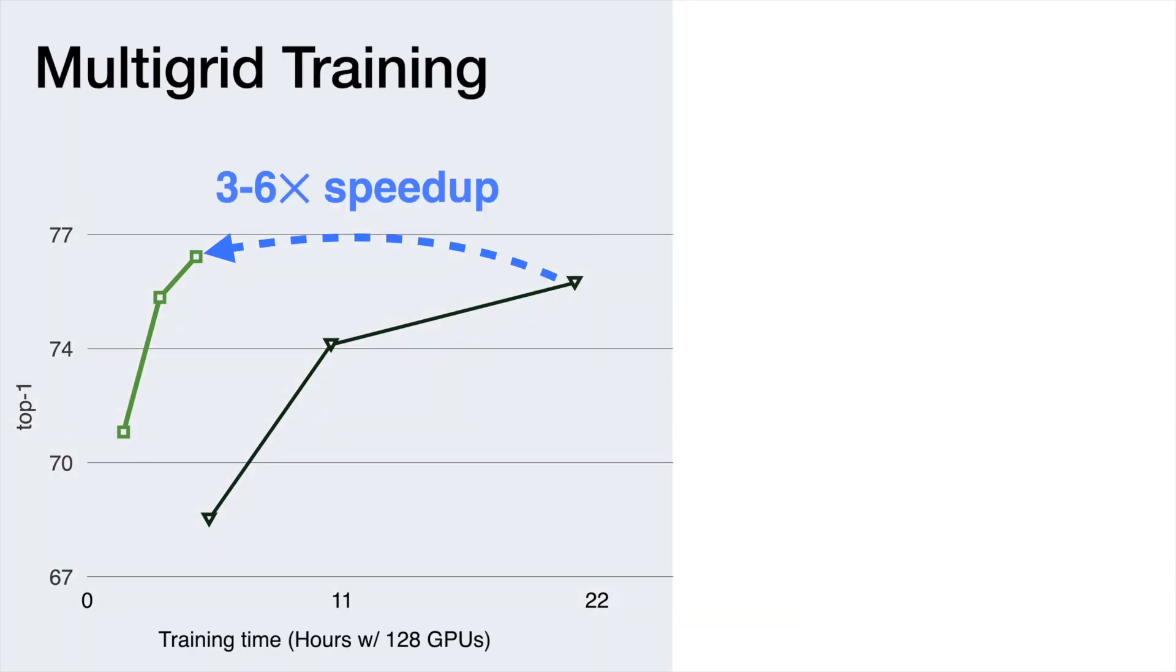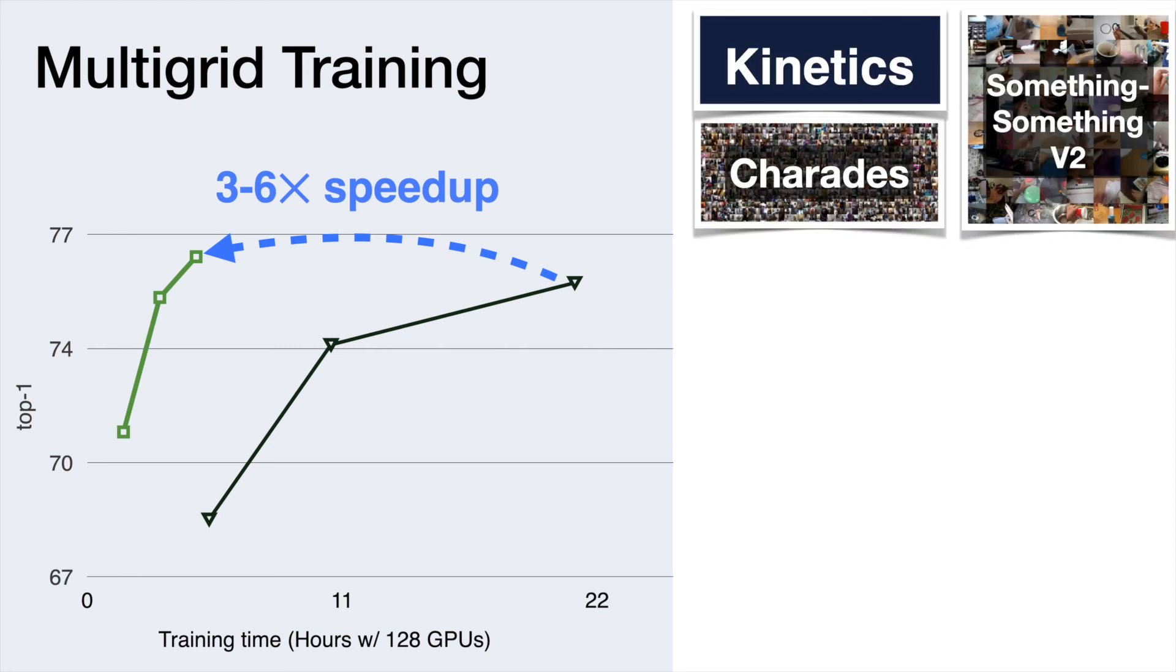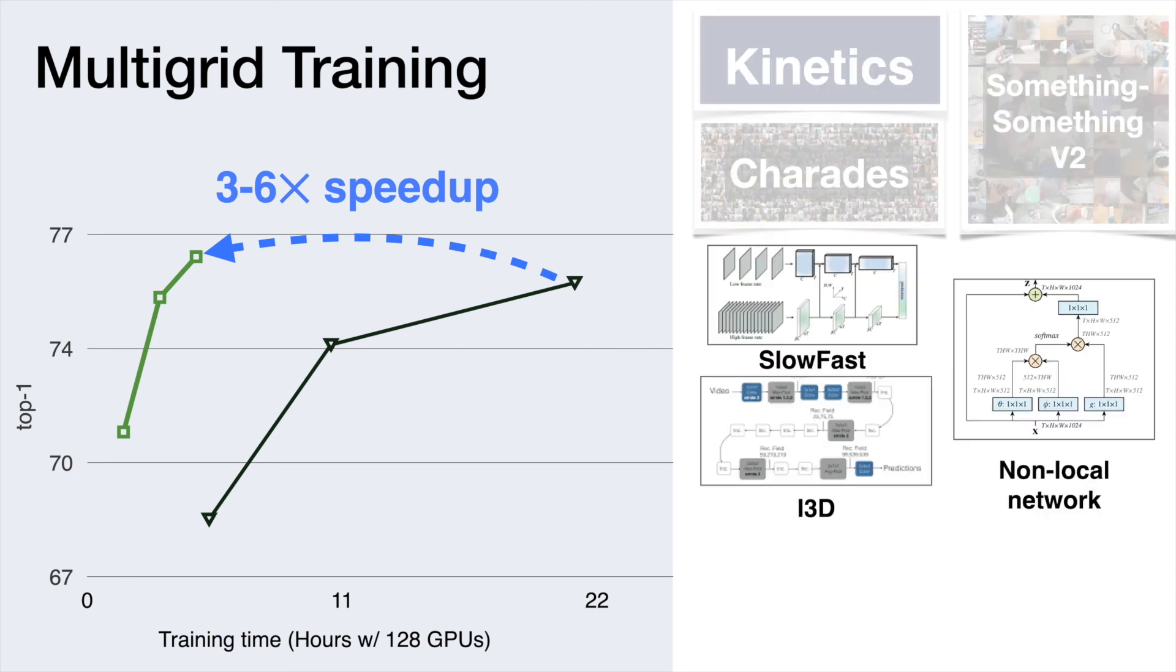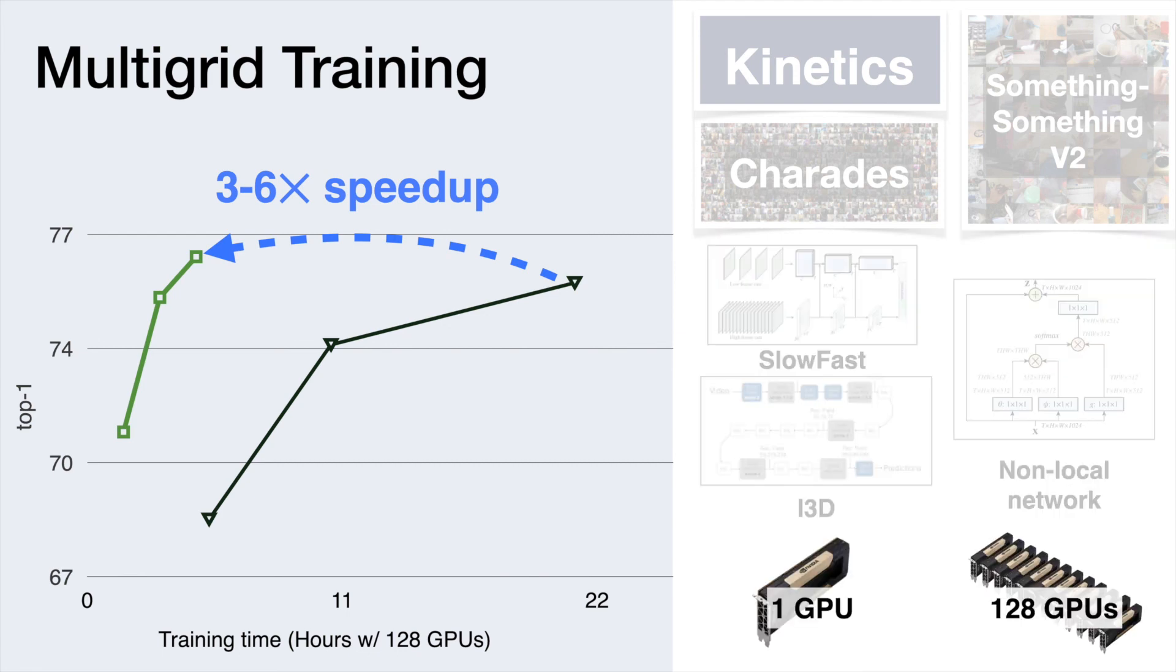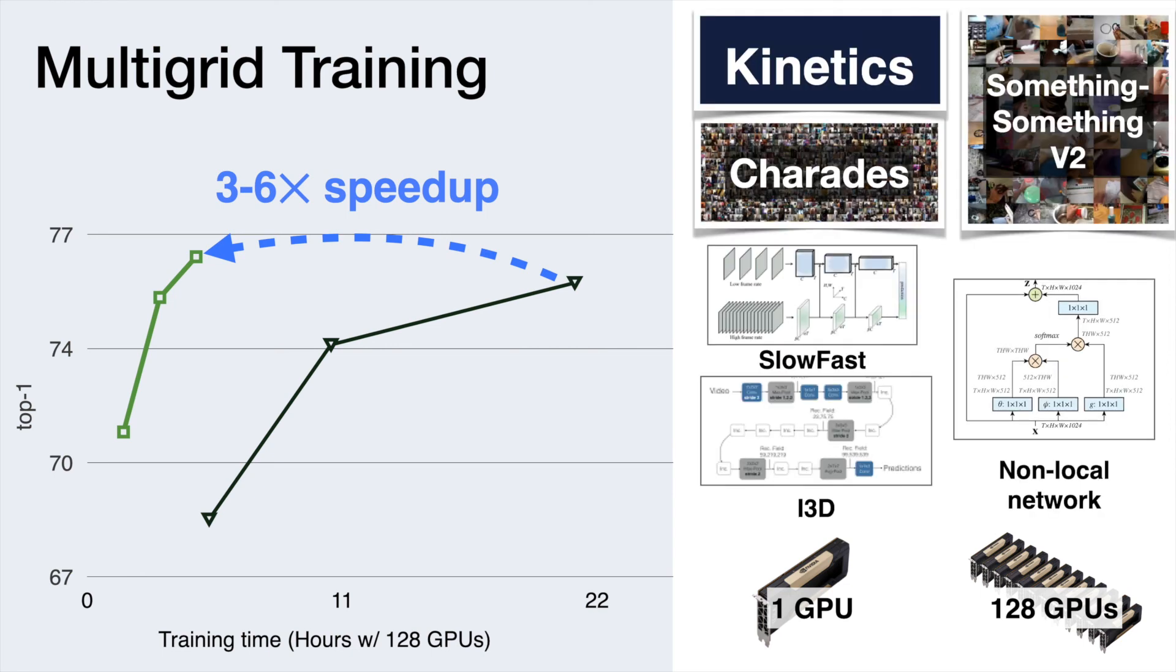Our method works out of the box for a wide range of settings, including three different datasets, with multiple models and their variants, and with a wide range of settings from single GPU to 128 GPU distributed training. We emphasize that we directly apply our method on each of these cases without further tuning, and we observe consistent speedup.